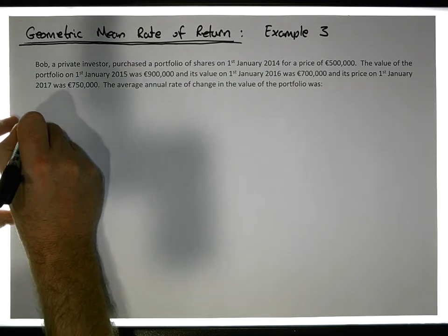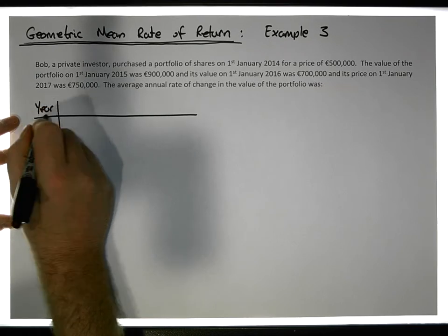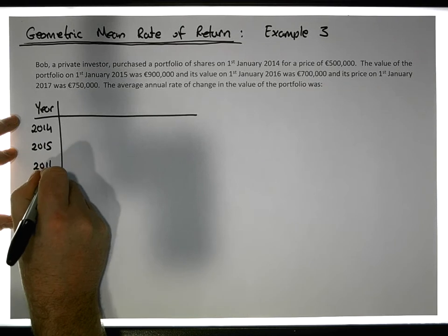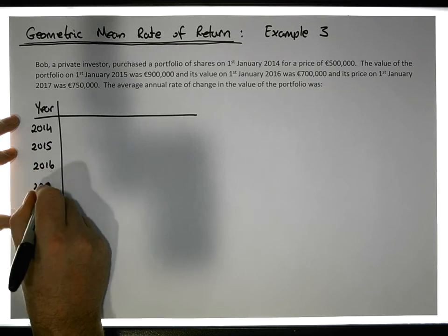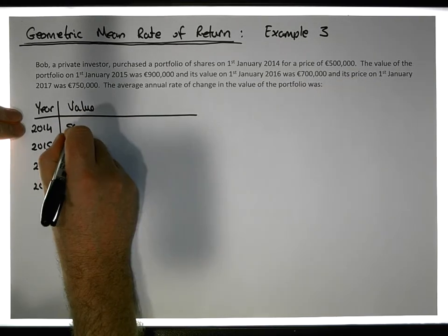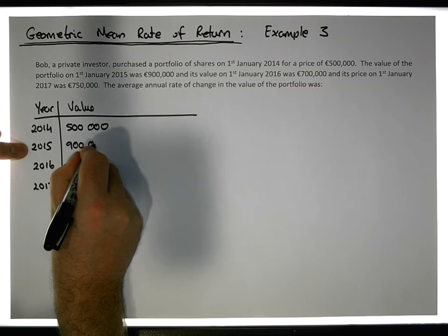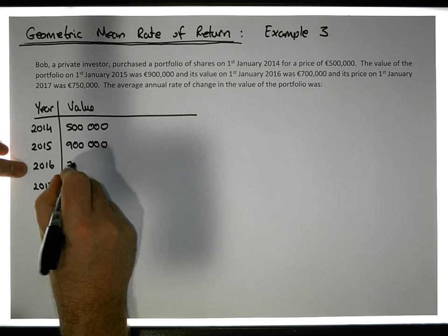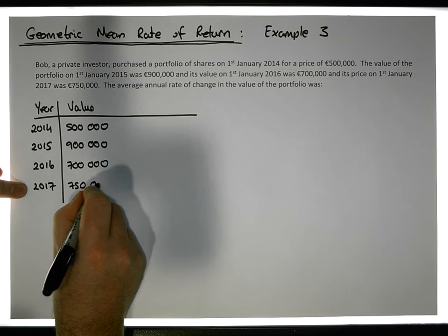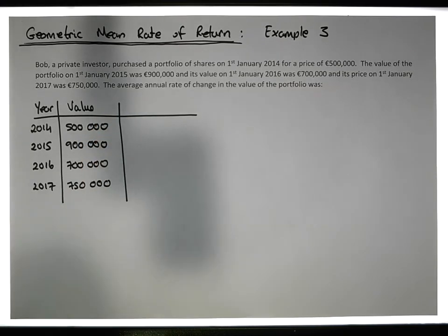So what we should do is create a table first of all. Here's our table — down here we have the year: 2014, 2015, 2016, and 2017. And let's put down the value associated with the portfolio over those particular periods of time. In 2014 it was €500,000; in 2015 it was €900,000; in 2016 it was €700,000; and in 2017 it was €750,000. So that's the value of the portfolio.